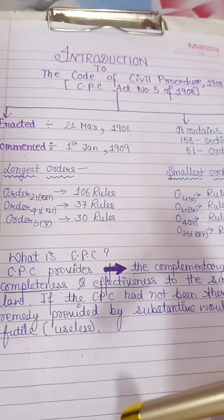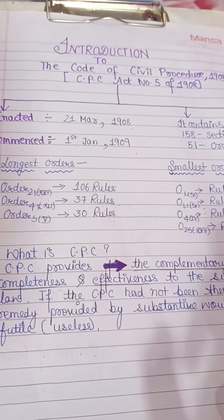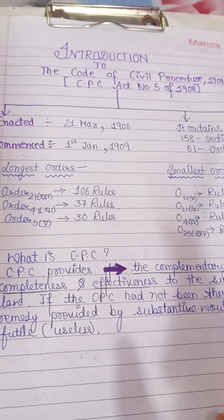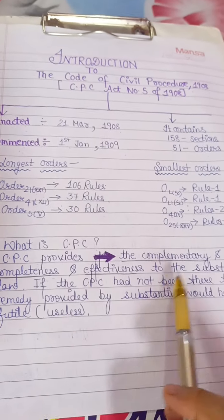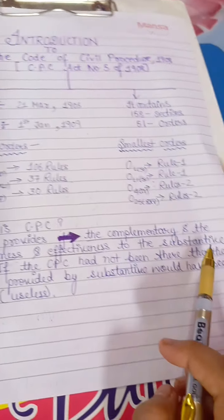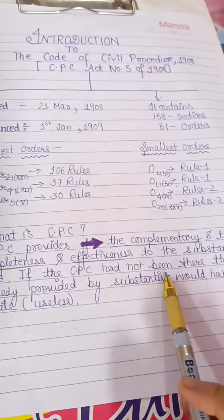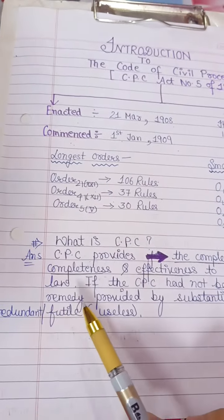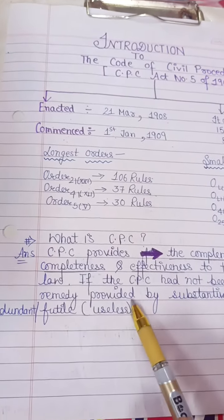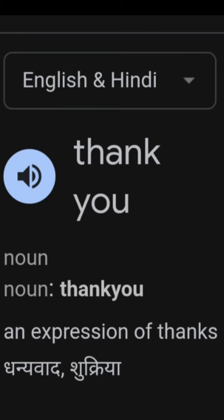CPC tells us how Substantive Law can be enforced and how the remedy can be given. If CPC had not been there, then the remedy provided by Substantive Law would have been redundant, futile, and useless. CPC thus follows and supports substantive law.